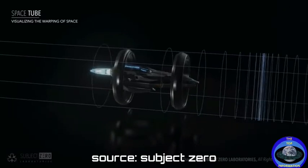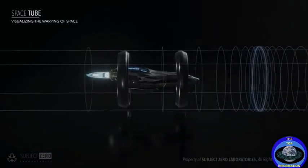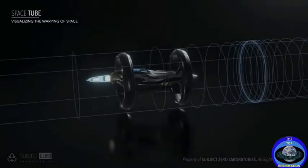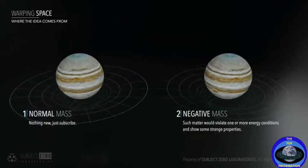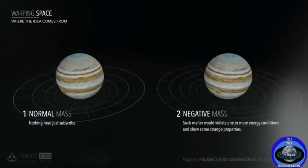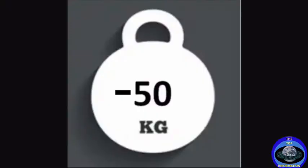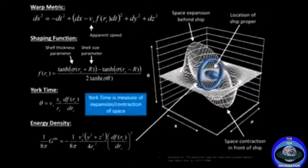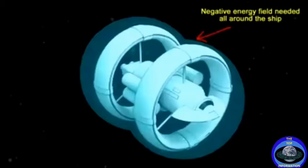The transition from contraction to expansion needs a large amount of negative energy. While normal matter warps space inwards, negative mass would warp space outwards — imagine something weighing negative 50 kilograms. NASA stepped into this project, and Dr. Harold White stepped in to verify if the amount of negative energy needed for this warp field to work could be brought down to something realistic.